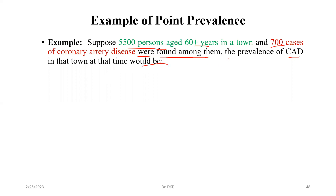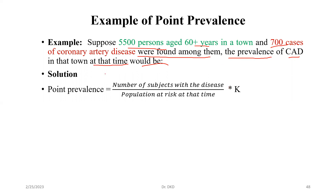We have to calculate the prevalence, and here it mentions 'at that time' — a particular, fixed point in time — so we need to calculate the point prevalence. The point prevalence formula is: number of subjects with the disease divided by the population at risk at that time. Here, the number of subjects with the disease is 700 and the population at risk is 5500.